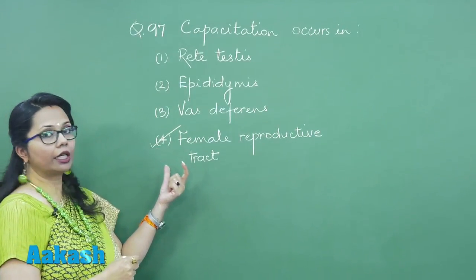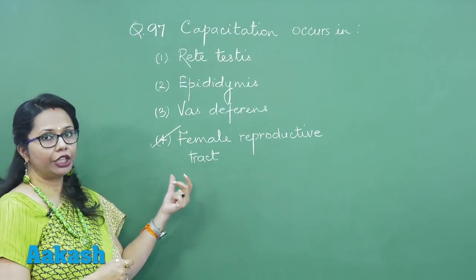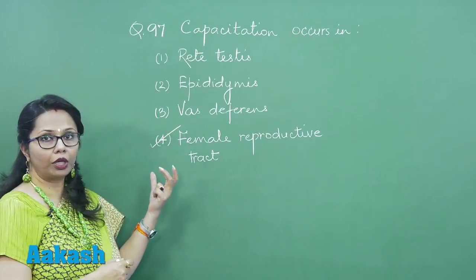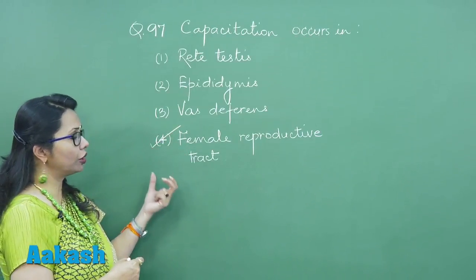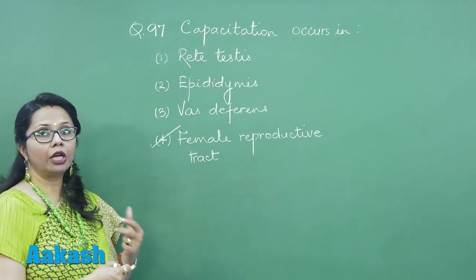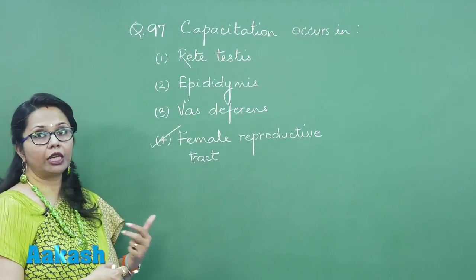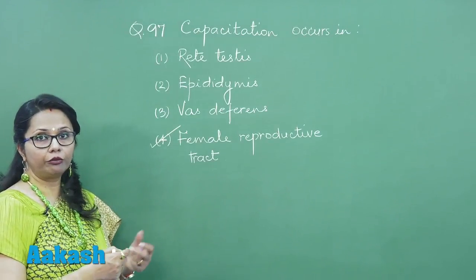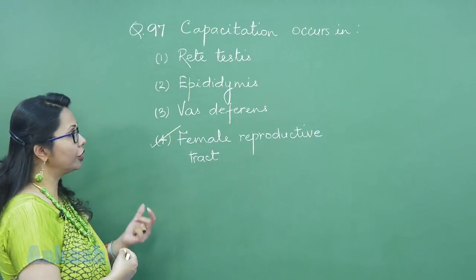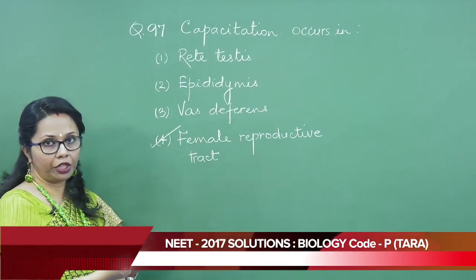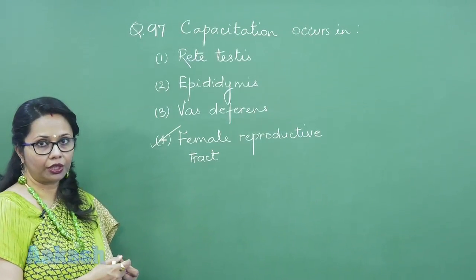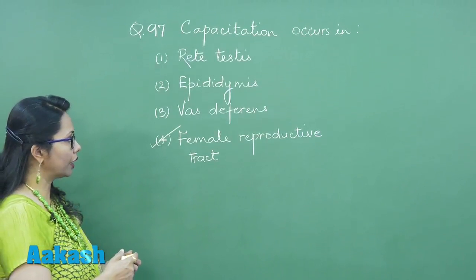During this process of capacitation, sperm ke upar se kai sare decapacitation factors hote hain jo epididymis ne uske upar laga ke rakhe hote hain — wo sab remove hote hain. There is the entry of calcium, jisse sperm tail ka movement undulating movement se whiplash movement mein convert hota hai, aur wo puri preparation hoti hai so that the next step, that is the acrosome reaction, asani se ho sake.